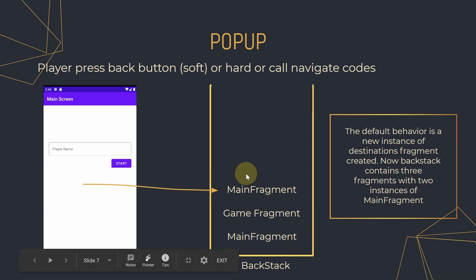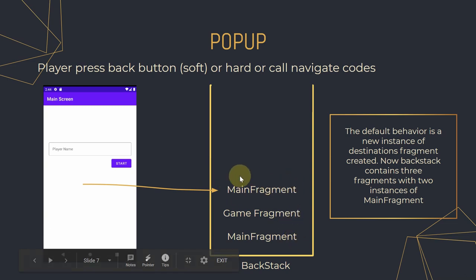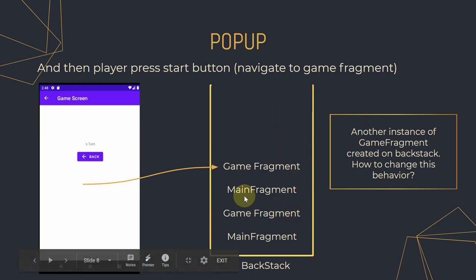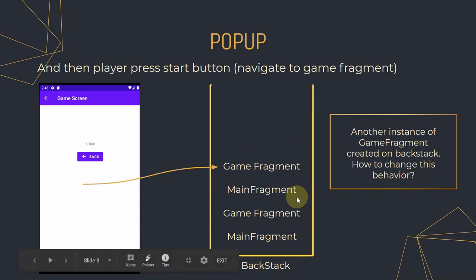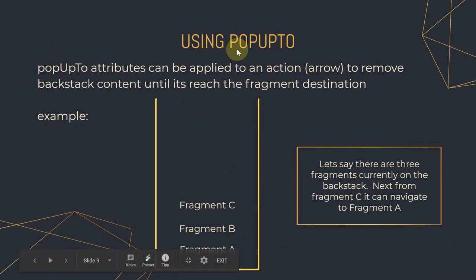When you press the back button, instead of going back to main, the system creates another instance of main fragment as a new item in the back stack. Then clicking start again creates yet another instance. As you can see, we end up with a memory problem — we have main fragment, game fragment, main fragment, and so on stored in the back stack.